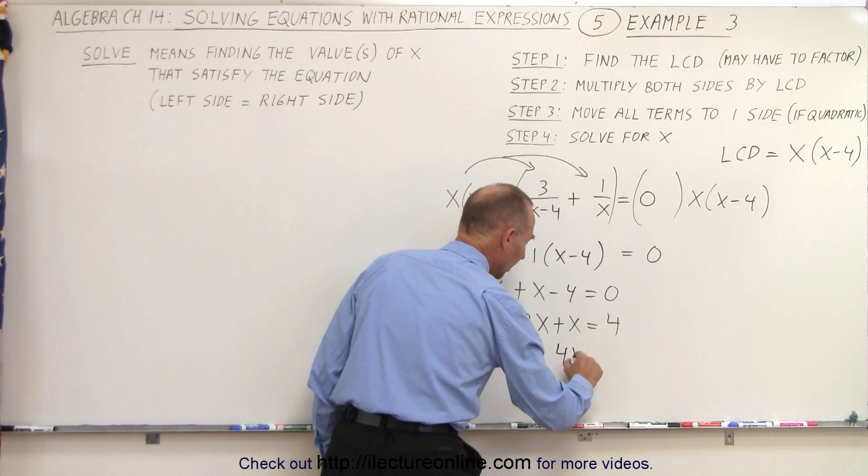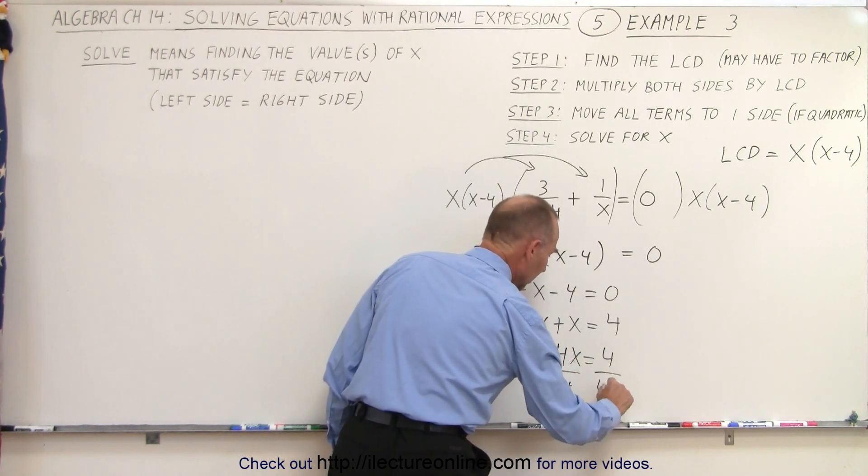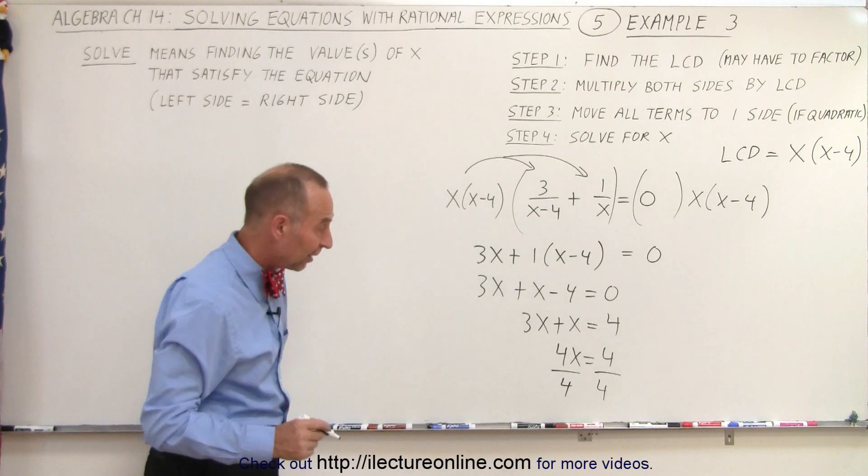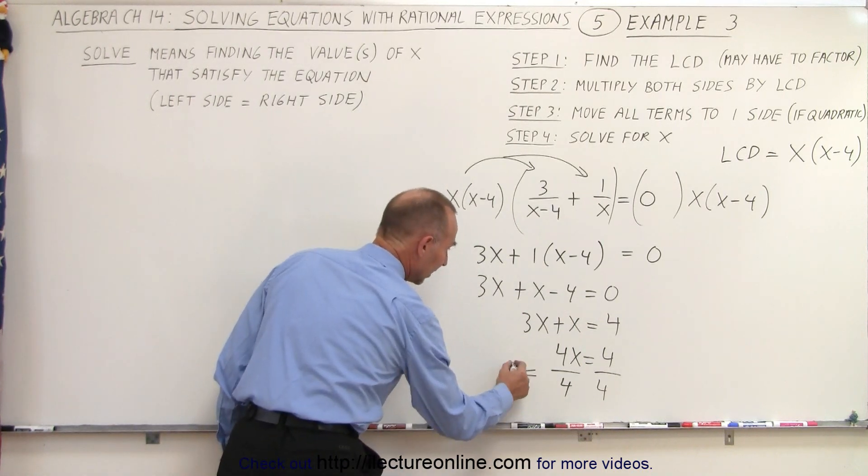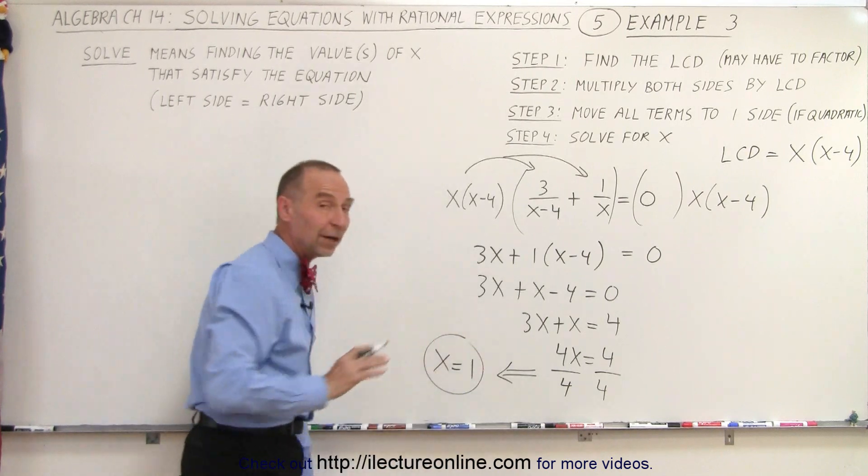3x plus x is 4x equals 4. And then we divide both sides by the numerical coefficient in front of x. And then finally, we can say that x is equal to 1. And that should be our solution.